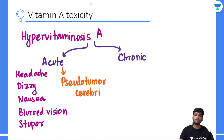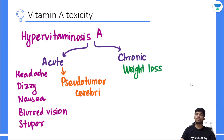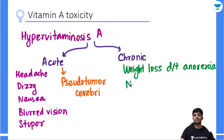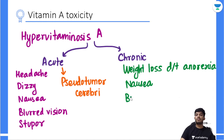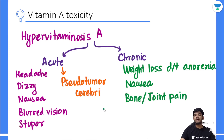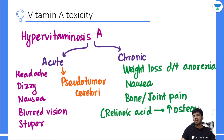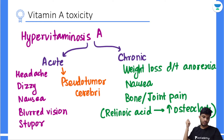In chronic hypervitaminosis A, there is weight loss due to anorexia, nausea, and vomiting. There is also bone and joint pain. The reason is that excess retinoic acid activates osteoclasts, leading to bone pain.